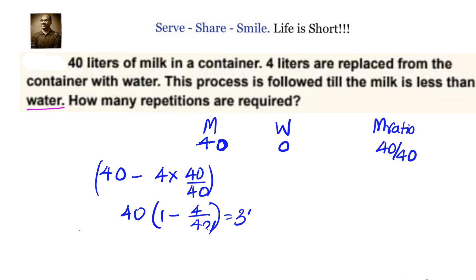This is in the ratio now 36 by 40. Next time when we go, how much milk we are removing next time from the 36 liters? We are removing milk in the ratio 36 by 40 and for 4 liters. So that will be 36 into (1 - 4/40).